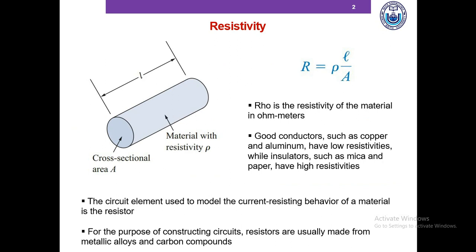Resistivity expresses a material's ability to resist or limit current flow. Let's say there is a piece of cylindrical wire whose length is L and cross-sectional area is A, and the resistivity of the material is rho, so the resistance R is equal to rho L by A. Here rho is the resistivity and its unit is ohm-meters. Conductors such as copper have low resistivity while insulators such as glass and paper have high resistivity. The circuit element used to model the current-resisting behavior of a material is called a resistor. Resistors are usually made of alloys and carbon compounds.